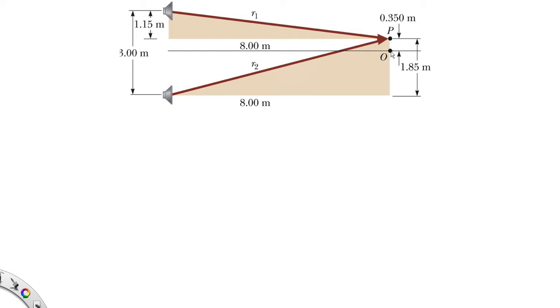OK, here's our diagram. Now, when we're at point O, the path difference from this speaker and this speaker is nothing. So that's when they are perfectly in phase.